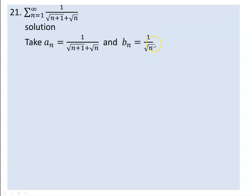A series made by this is a divergent p-series. n is raised to the power of 1 over 2, so the p value is 1 over 2. Since 1 over 2 is less than 1, the series is divergent.